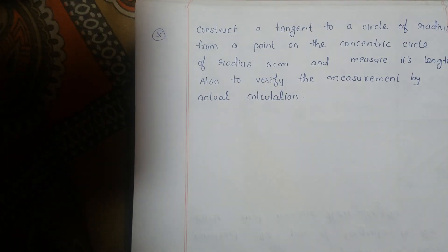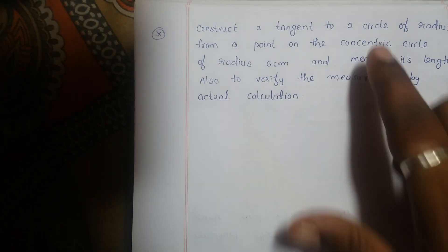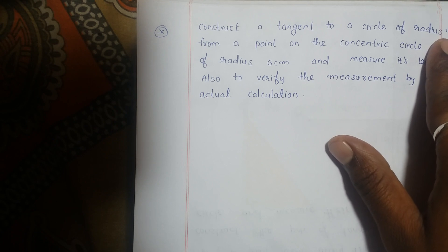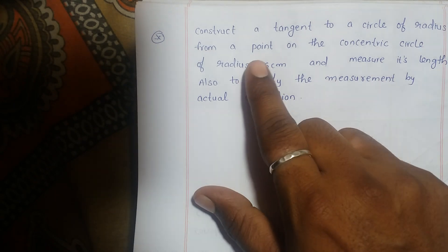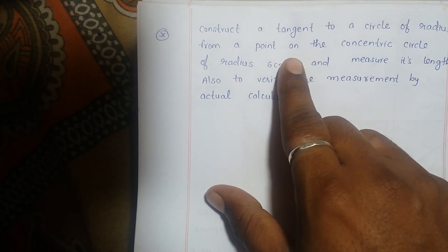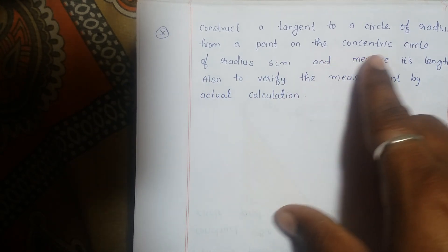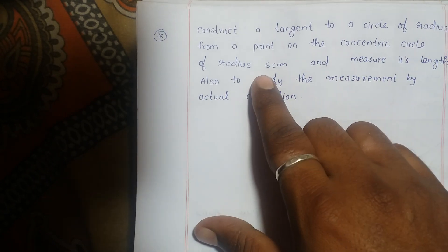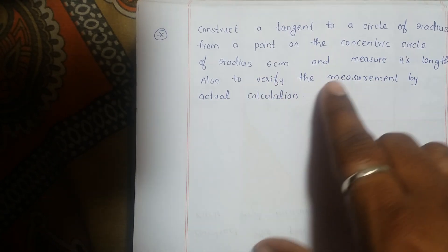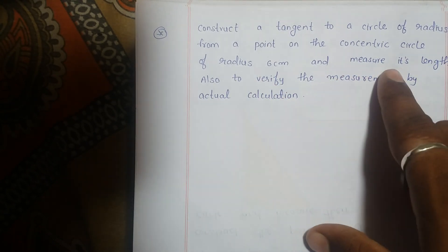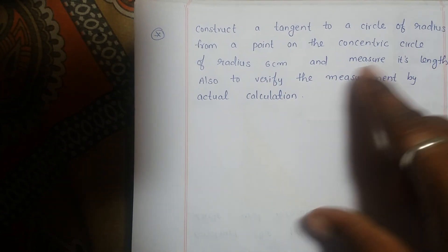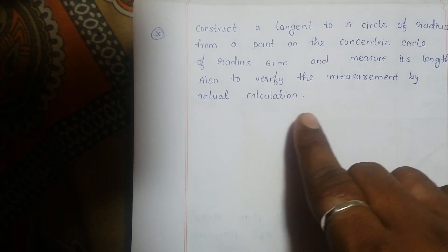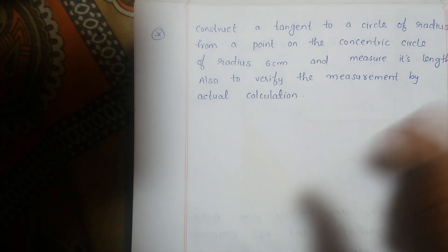Construct a tangent to a circle of radius 4 cm from a point on the concentric circle of radius 6 cm, and measure its length. Also verify the measurement by actual calculation.